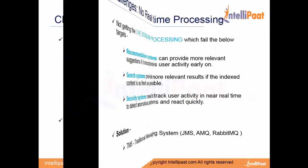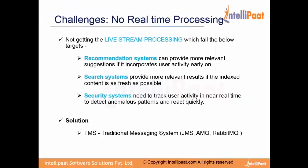This causes three major problems. The first is recommendation systems, which can provide more relevant suggestions if they incorporate user activity in real time. If a user is clicking on links on the LinkedIn webpage and we are not analyzing that data in real time, we cannot provide that user the latest results.